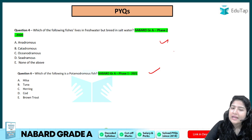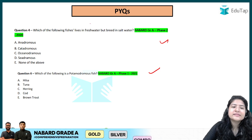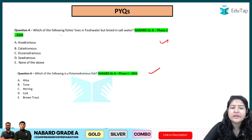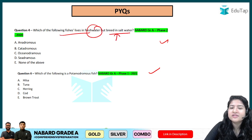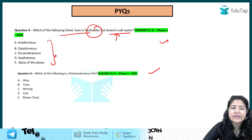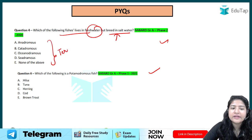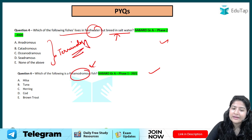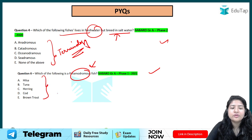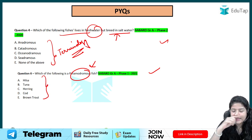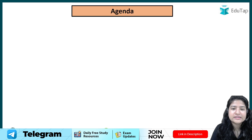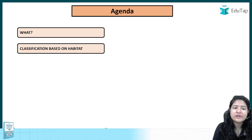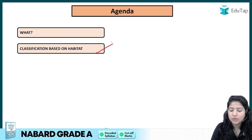For example, a previous year question asked: which of the following fishes live in fresh water but breed in salt water? A description was given and you had to identify the correct terminology. Questions can also be asked the other way — they give the terminology and you have to provide the examples.